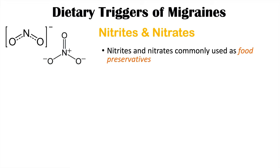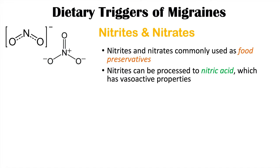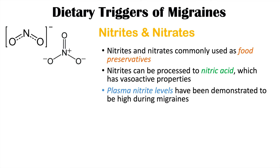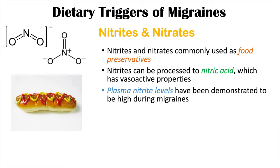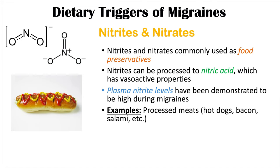Nitrites and nitrates are also triggers of migraine headaches. They are commonly used as food preservatives. Nitrites can be processed into nitric acid, which has vasoactive properties — this is why they may cause migraines. It's also noted that plasma nitrite levels are higher during migraine attacks. Nitrites and nitrates can be found in processed meats such as hot dogs, bacon, and salami.